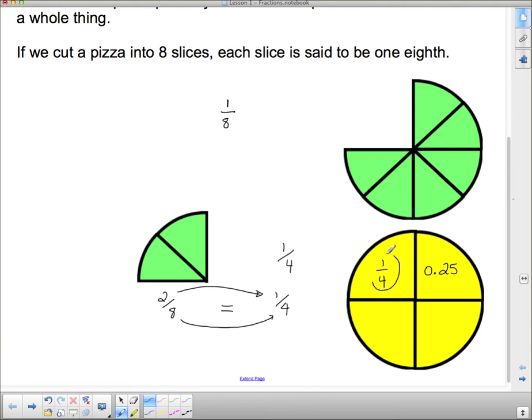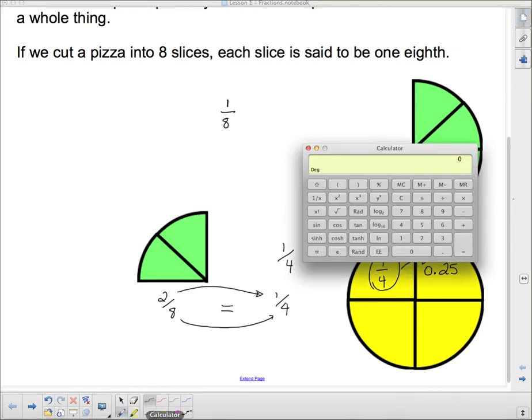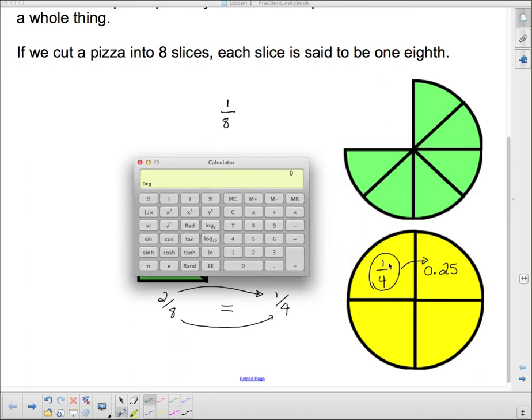Now, the easiest way to change from a fraction to a decimal is simply to divide the numerator by the denominator. And I'm going to pull up my calculator and show you just that. If I take 1, which is the top of the fraction, and divide it by the bottom of the fraction, I get 0.25,